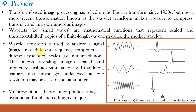Wavelet transform is used to analyze a signal or image into different frequency components at different resolutions or scales — that is multi-resolution. In addition to frequency, wavelets also capture temporal or time information, and they are bounded in both frequency and time domains. These wavelets are localized waves that decay to zero instead of oscillating forever like Fourier transform waves. This allows revealing image spatial and frequency attributes simultaneously, and features that might go undetected at one resolution may be easy to spot at another. This multi-resolution property incorporates the image pyramid and subband coding techniques.